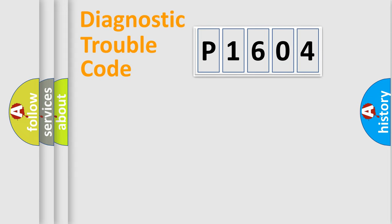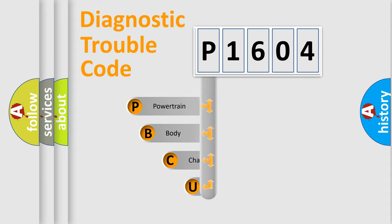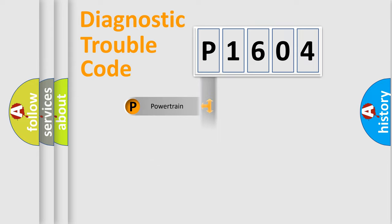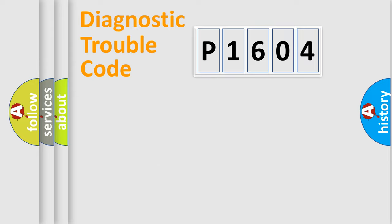Let's do this. First, let's look at the history of diagnostic fault code composition according to the OBD2 protocol, which is unified for all automakers since 2000. We divide the electric system of the automobile into four basic units: Powertrain, Body, Chassis, and Network.